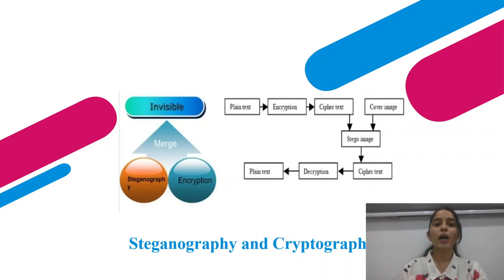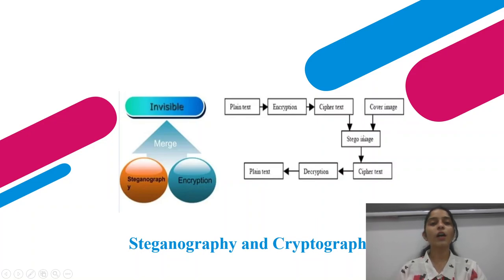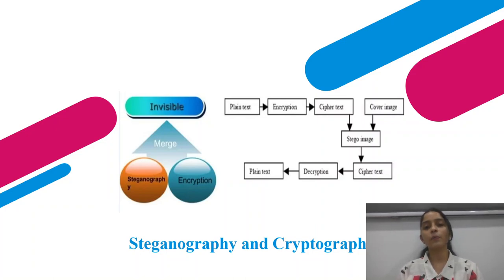Now we'll see how we can merge both steganography and cryptography. First we perform cryptography — converting the plain text into cipher text by encryption. Then we hide this cipher text into a cover image, forming a stego image. If the receiver has the key, they will be able to decode the cipher text and by decryption convert it back into plain text.